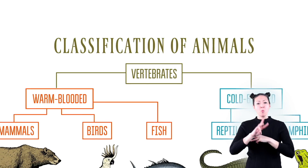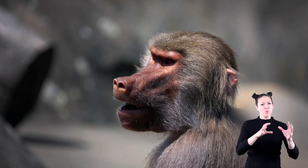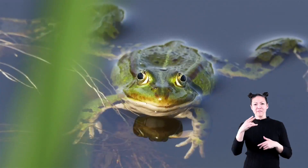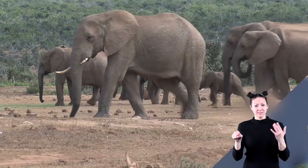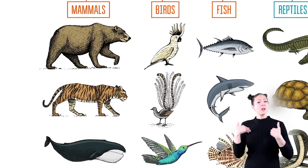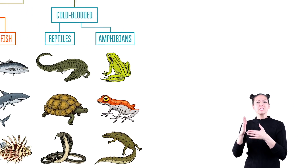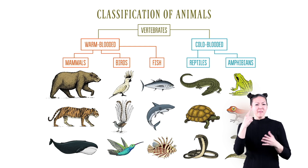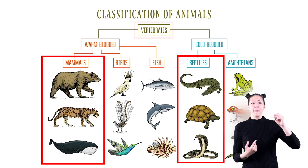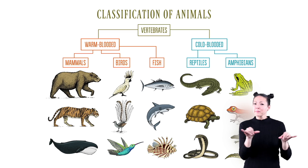Scientists have classified all vertebrates into five different groups: mammals, birds, fish, reptiles, and amphibians. Each group of animals has its own unique traits and characteristics, but some groups share one or more of the same traits. For example, birds and mammals are both warm-blooded, and reptiles and mammals are both vertebrates. However, they are not in the same group because they also have some differences.